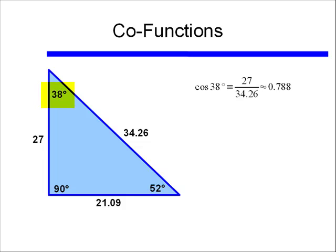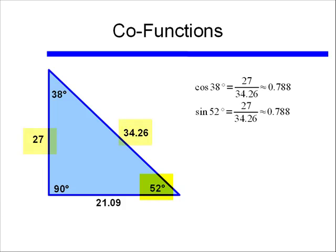If we look at cosine of 38 degrees — cosine equals the adjacent side divided by the hypotenuse — that gives us 27 divided by 34.26, or approximately 0.788. If instead we look at the 52 degree angle and take the sine, sine of 52 degrees equals the opposite divided by the hypotenuse, which is also 27 divided by 34.26. So cosine of 38 degrees and sine of 52 degrees are both approximately equal to 0.788.